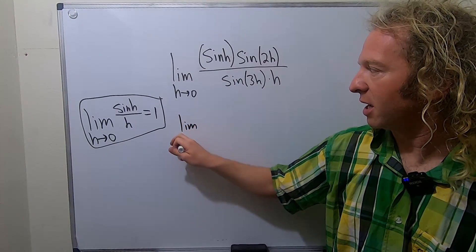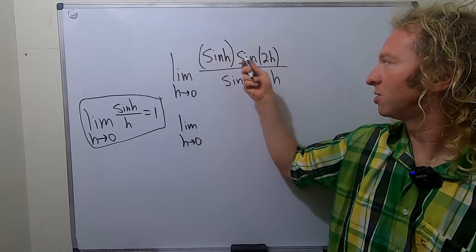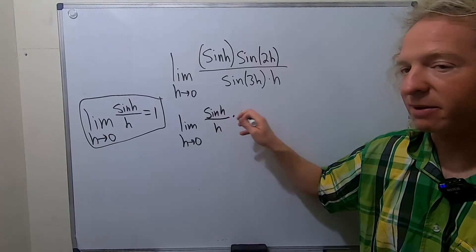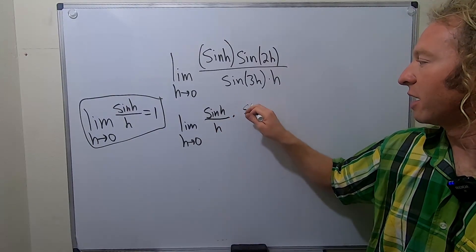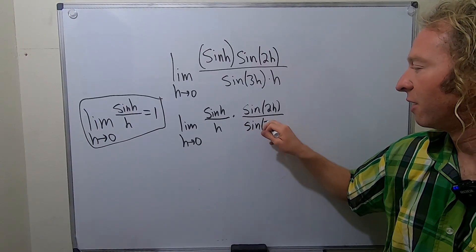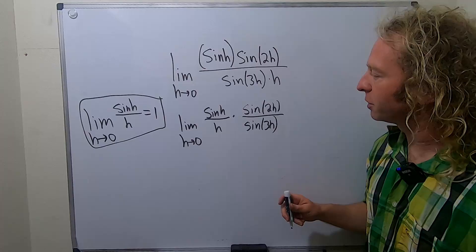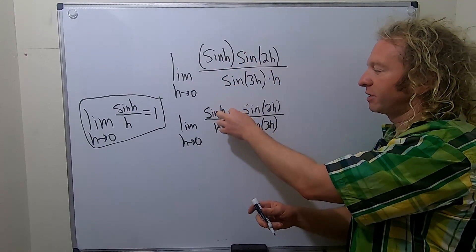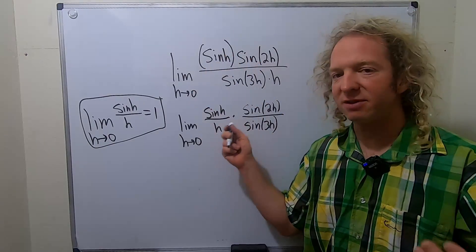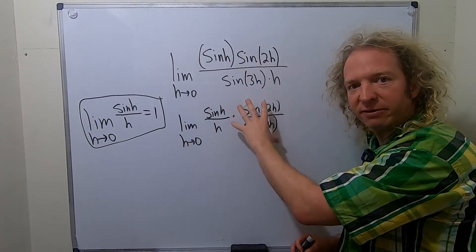So this is the limit as h approaches 0. And we can write this piece, we can rewrite this as sine h over h times, and we can write this as sine 2h over sine 3h. Okay, so that's a good, I think it's a good first step. So basically this times this is this times this, so things are good. This times this is this times this, so we have the same expression. So basically we can break this up. It'll be the limit of this times the limit of this.